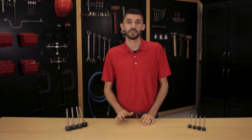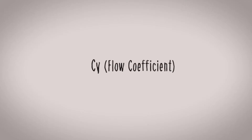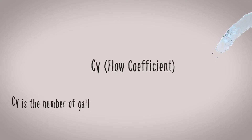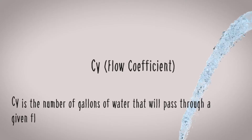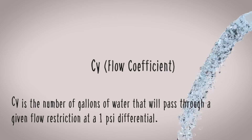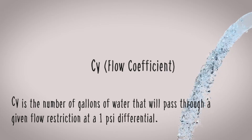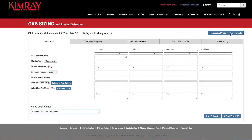I know it sounds obvious to choose a high pressure valve for a high pressure application, but there's another key factor you need to consider: calculated CV. CV is the number of gallons of water that will pass through a given flow restriction at a 1 psi differential. Basically, you can think of it as the orifice size of a valve.